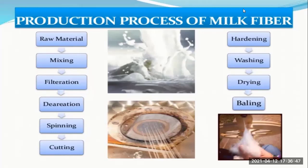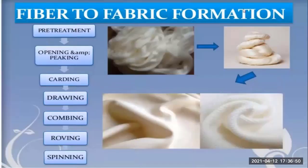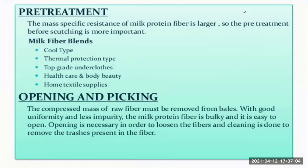Now we have the milk fiber, but how can we convert the fiber into fabric? The fiber-to-fabric formation includes several steps, which we will discuss one by one. The first step is pre-treatment. The specific resistance of milk protein fiber is large, so pre-treatment before stretching is very important. Milk fiber blends are used in applications like cool type, thermal protection, top-grade undercloth, healthcare and body beauty, and home textile supplies.